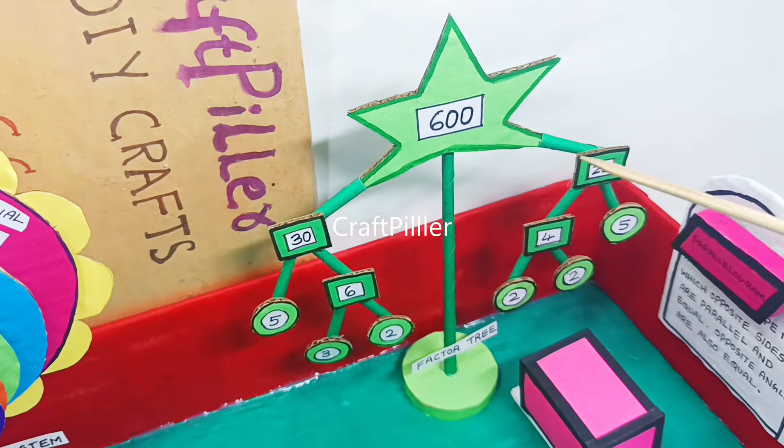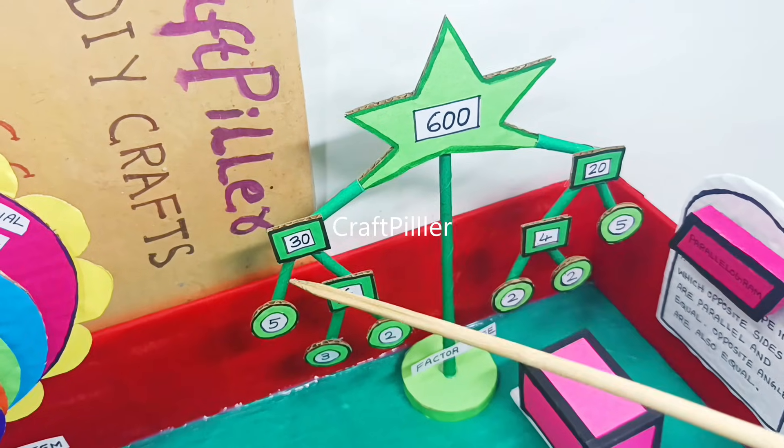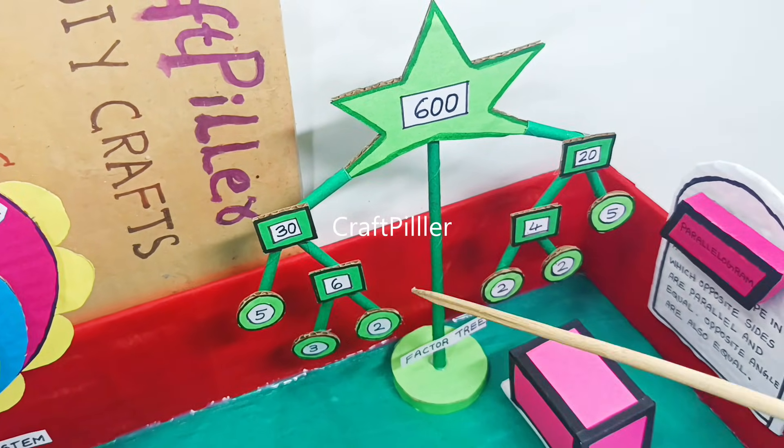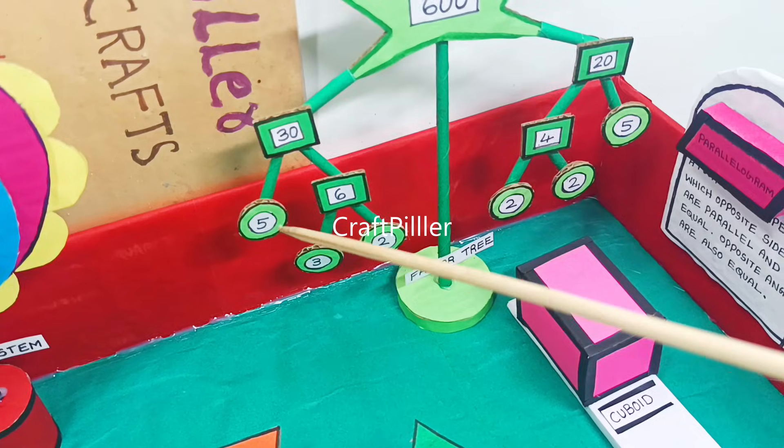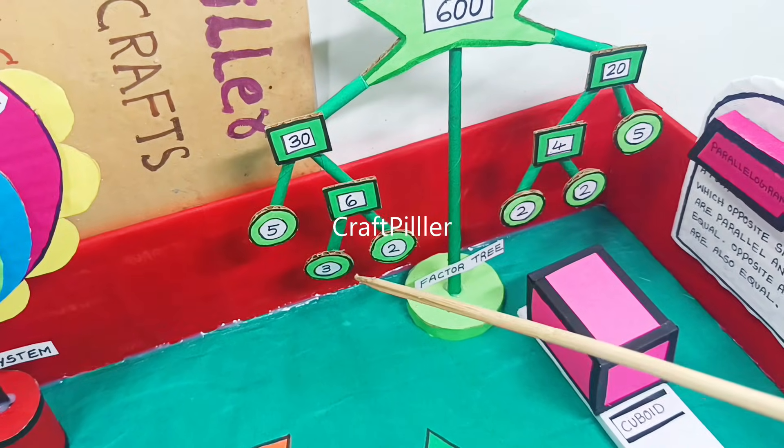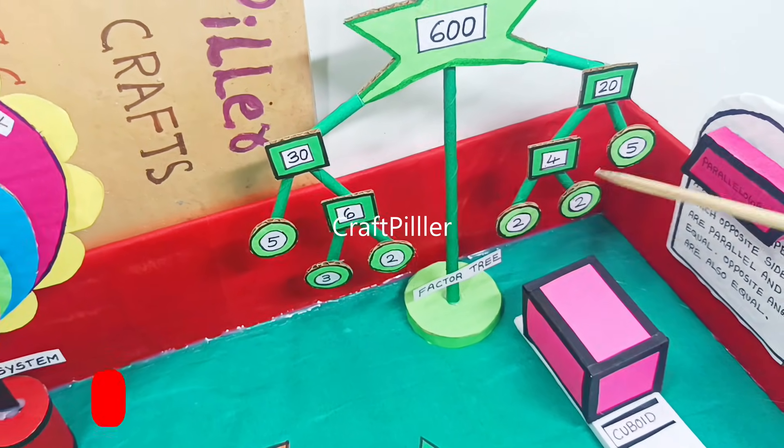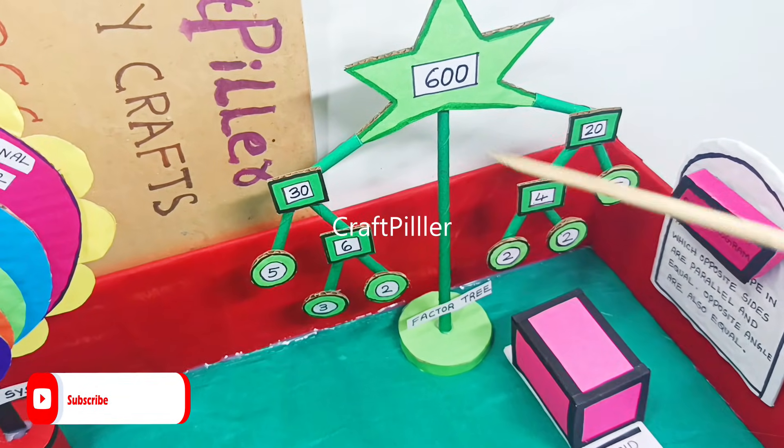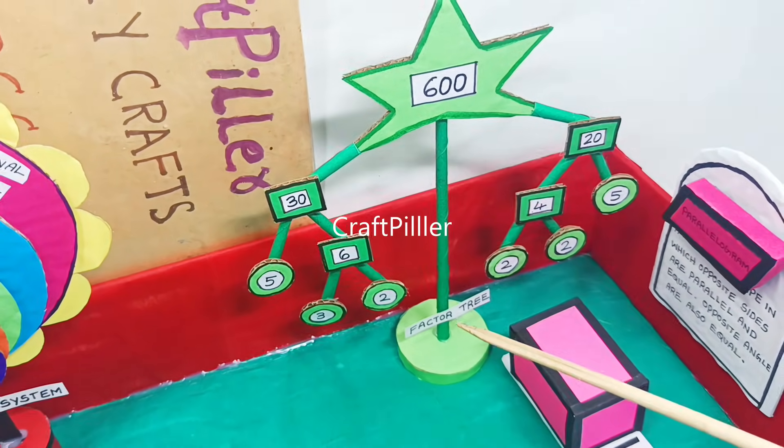These 30 number factors are further divided until it leads to prime factors. Now this 5 cannot be further divided apart from 1, and 3, 2, 2, 5 are prime factors of this number. This visual representation of given factors is represented in this way in the park.